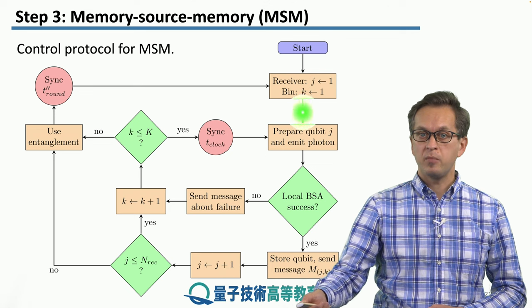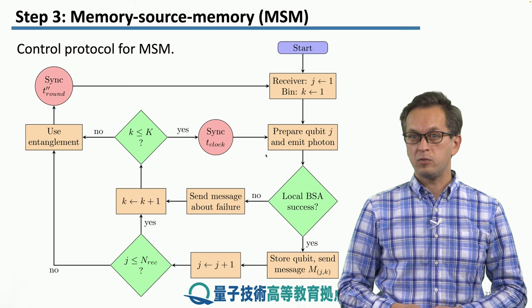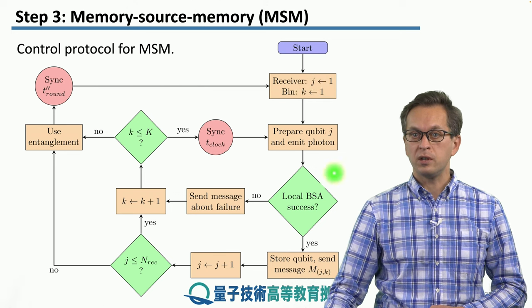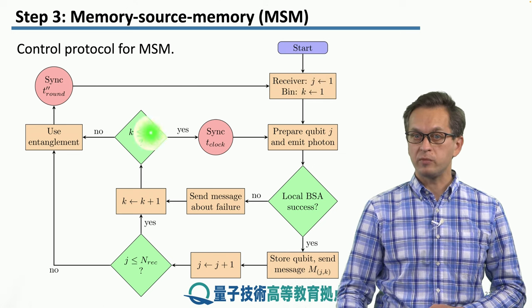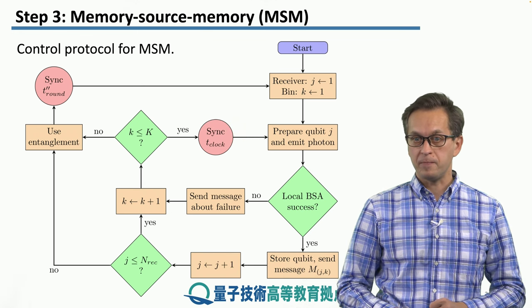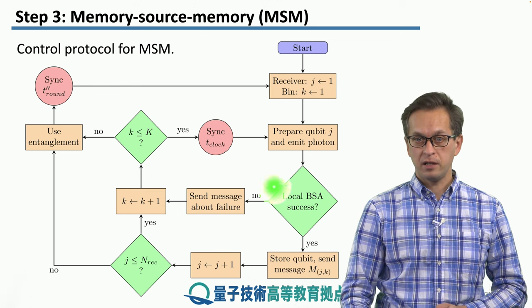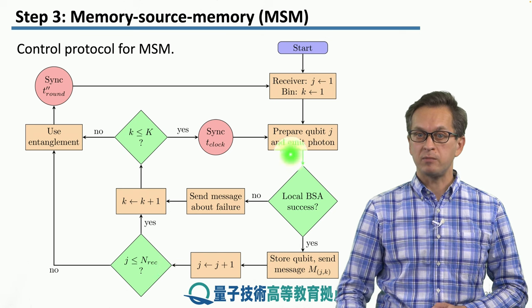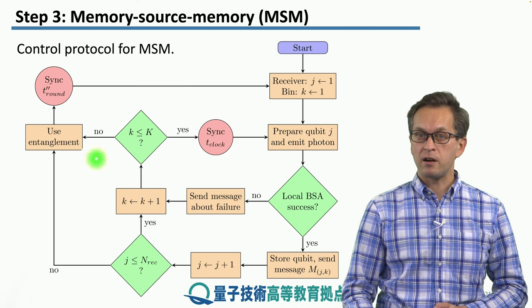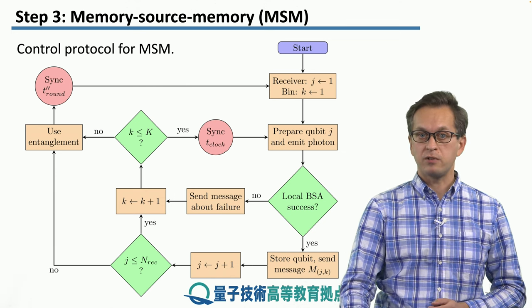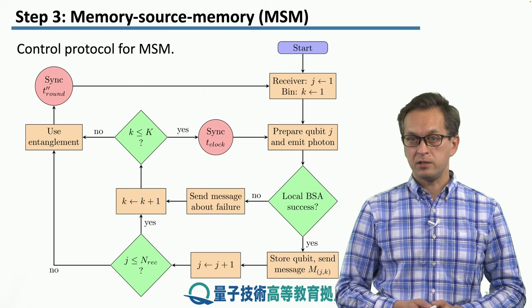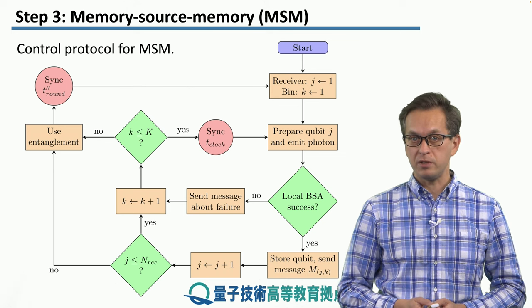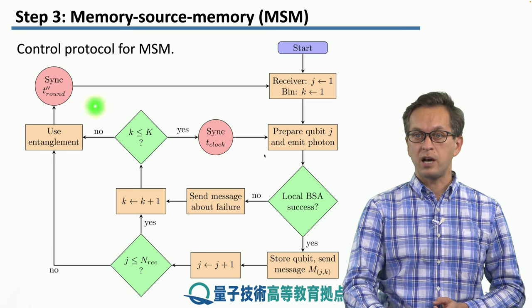We start by initializing the receiver index j to 1 and the bin index k also to 1. In this internal loop, we try to establish entanglement using the photons coming from the source and the photons coming from the memory in the local BSA. As long as there are free memories at the receiving end, we continue this loop that tries to establish entanglement, as well as long as there are photons incoming from the source. If one of these runs out, we exit the loop, wait for the classical messages to arrive, act accordingly, and maybe consume the entanglement established between the two receiving stations. Finally, we synchronize to the time of each round.